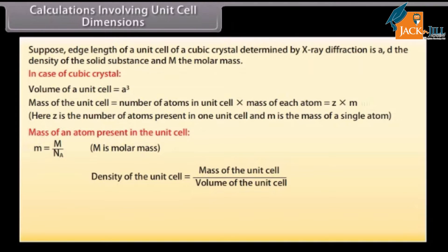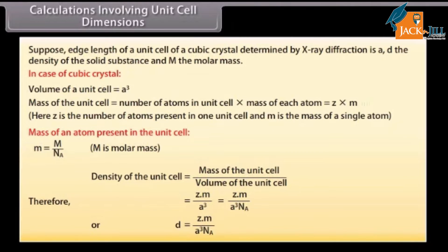The mass of an atom present in the unit cell, M, equals M upon Nₐ, where M is molar mass. The density of the unit cell equals the mass of the unit cell divided by the volume of the unit cell. Therefore, D = ZM / A³Nₐ.